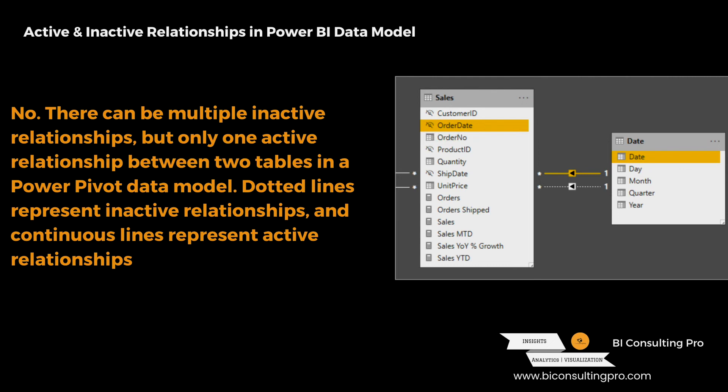What is an active relationship and what is an inactive relationship? An active relationship is used while slicing and dicing the data, or when you need to get data from a different table in Microsoft Power BI. However, inactive relationships play a crucial role too — whenever you are defining some calculations, you can utilize an inactive relationship using certain DAX functions to create measures and analyze the data.